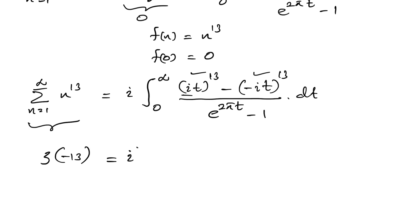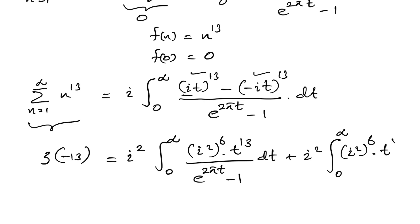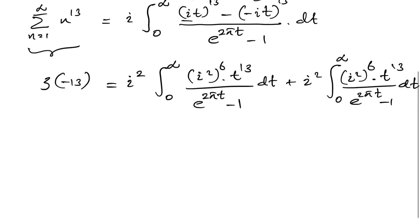Taking i as a common factor, we write i^12 as (i^2)^6. Since i^2 = -1, we get (-1)^6 = 1. We carry out the same process for the second integral. Since both integrals are identical, we combine them.